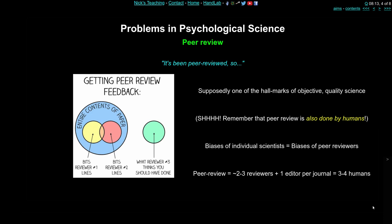Peer review is supposed to be one of the hallmarks of objective quality science. You often hear in the media that a study was peer-reviewed, which is supposed to signal good science, whereas a study that hasn't been peer-reviewed should be taken with caution. That's true and it's how the scientific process works, but it's not absolute — published or peer-reviewed is not the same as being good. Peer review is done by humans, and we're all subject to the same scientific biases discussed earlier, so the biases of individual scientists are the same as the biases of individual peer reviewers.